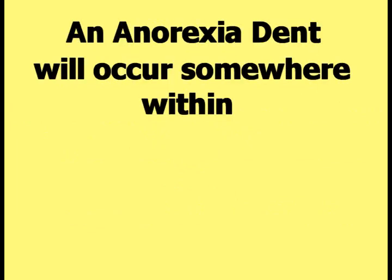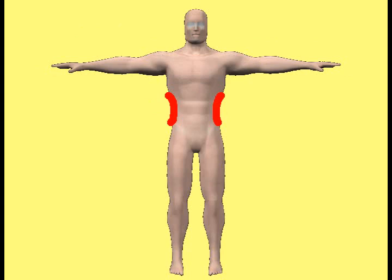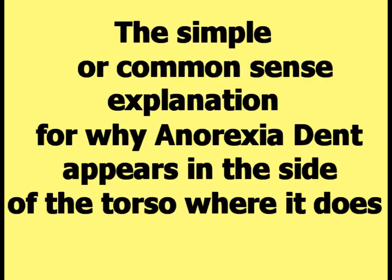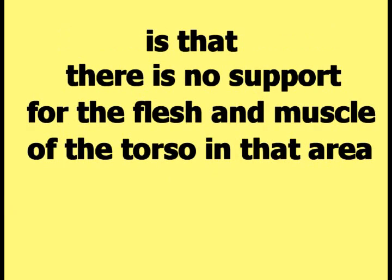An anorexia dent will occur somewhere within the area highlighted on the computer model human body shown in this picture. It would be natural to wonder why anorexia dent appears in that specific area of the torso. The simple or common sense explanation is that there is no support for the flesh and muscle of the torso in that area.